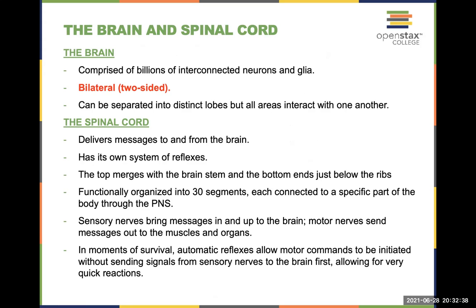The brain is bilateral and can be divided into distinct lobes: parietal, temporal, occipital, and frontal lobes, each of which can be further divided into left and right. The different lobes interact with each other and have different specializations. The spinal cord delivers messages to and from the brain and has its own reflex systems. Sensory nerves bring messages up into the brain; motor nerves send messages back out.